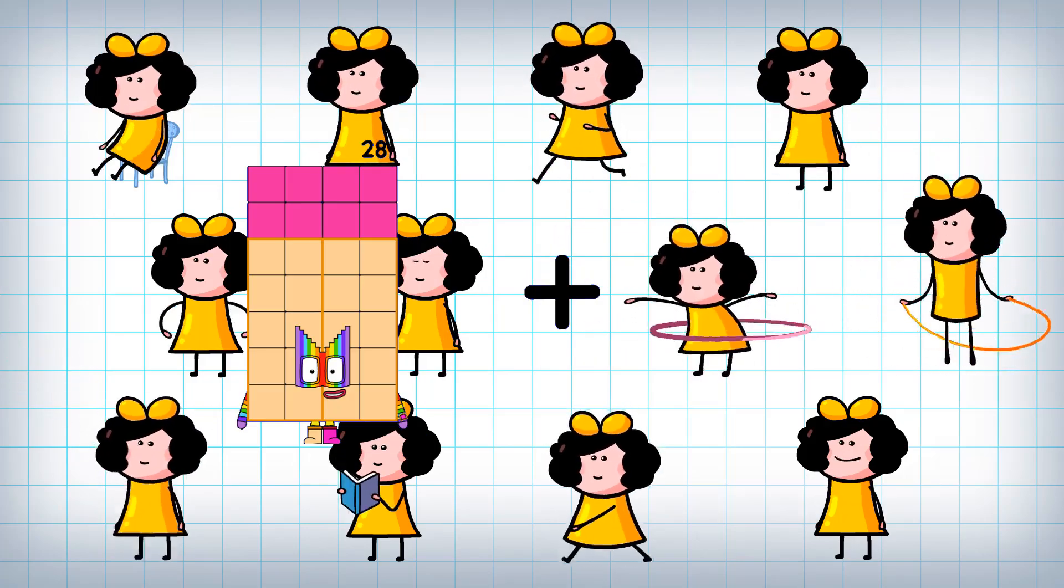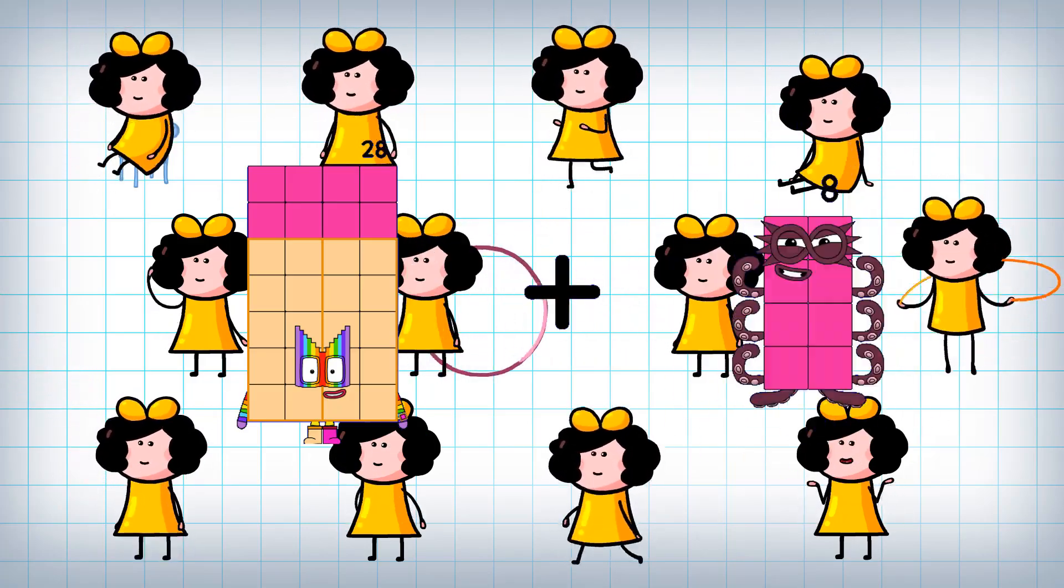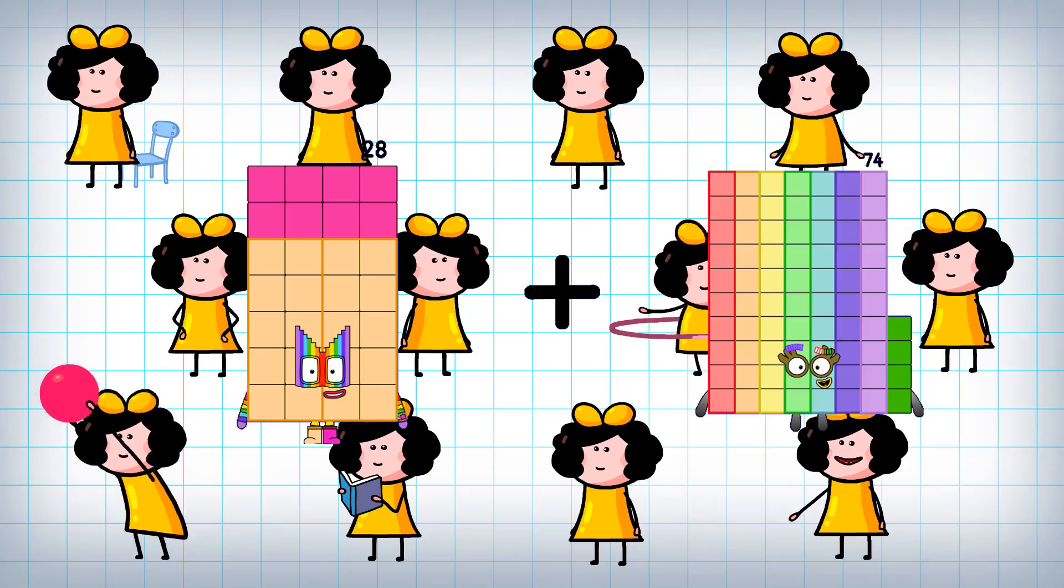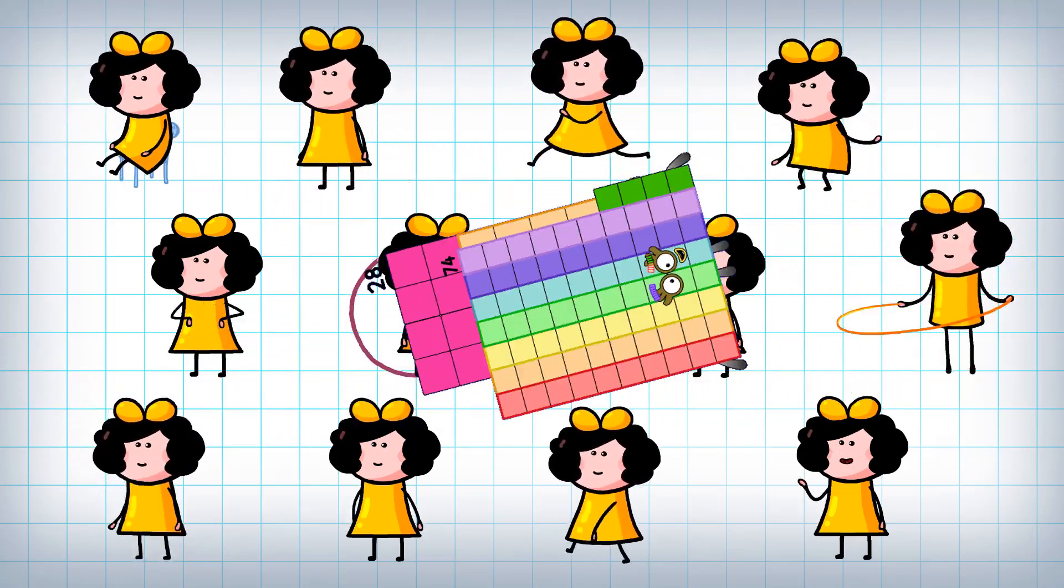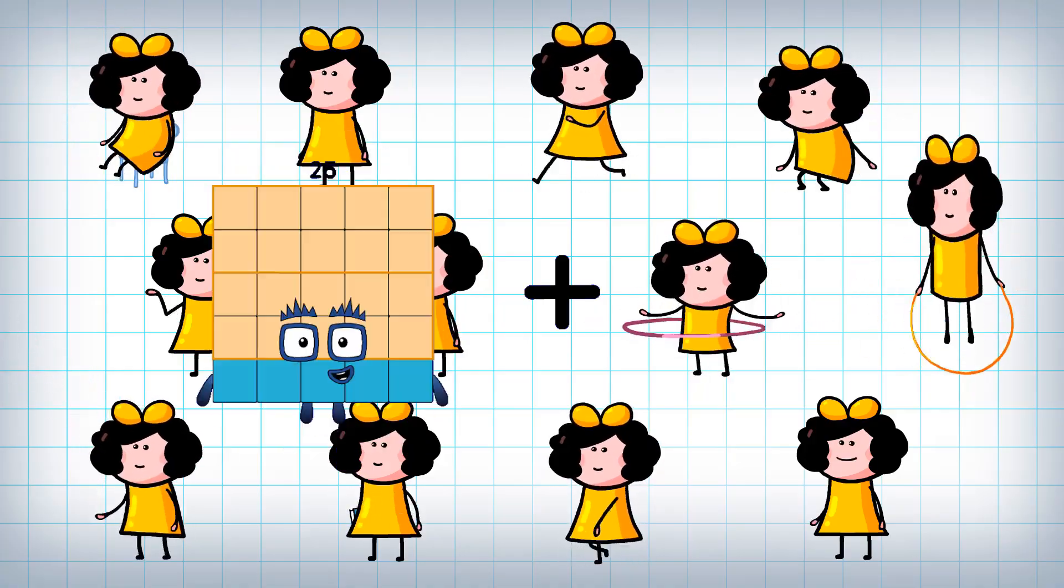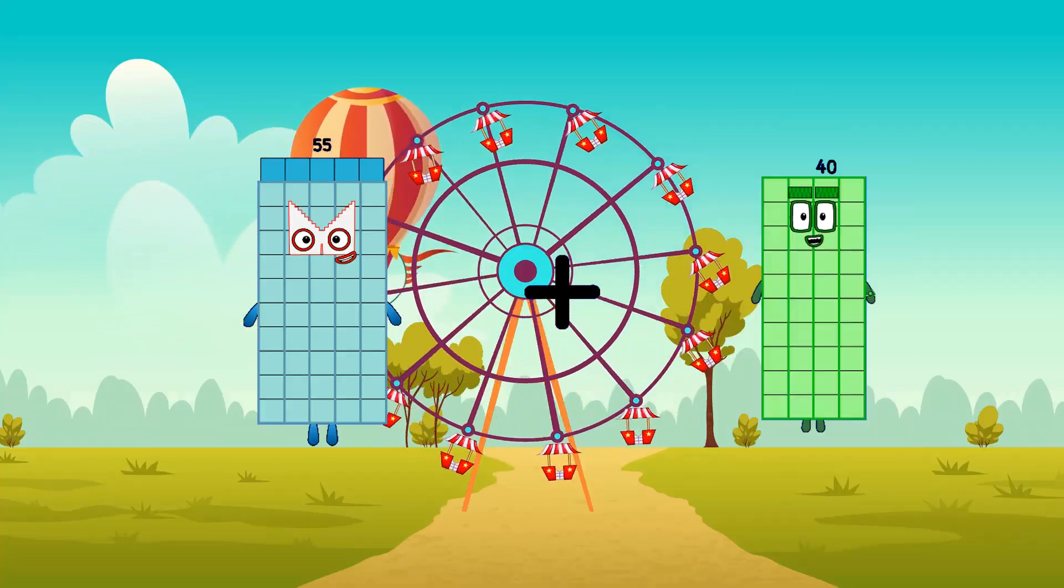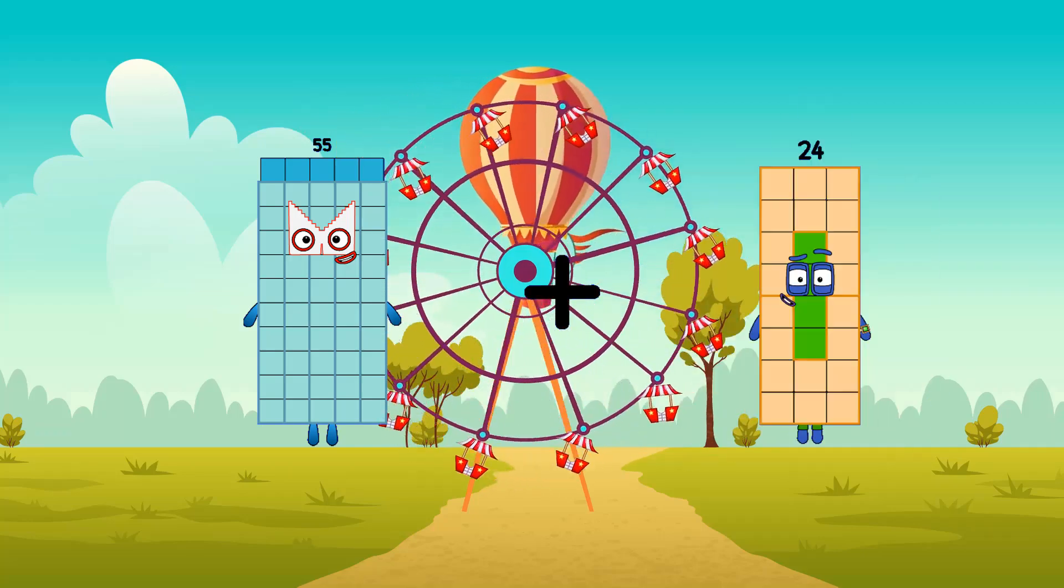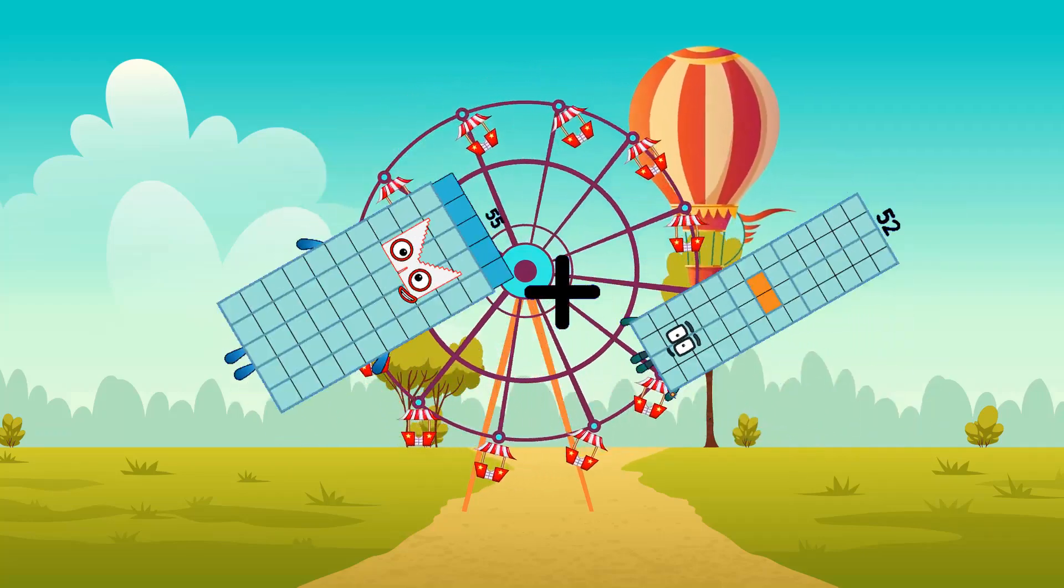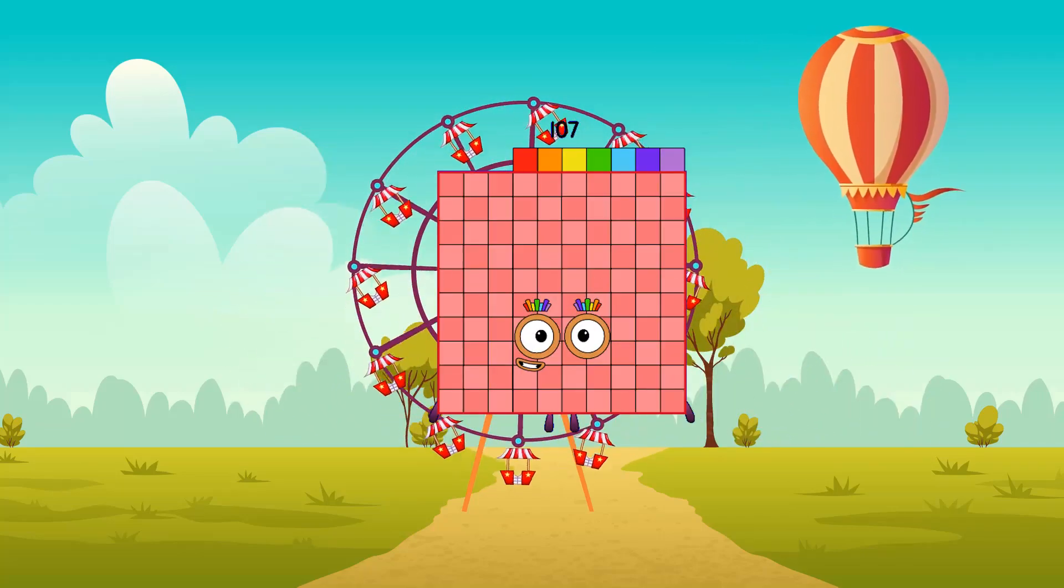28 plus 74 equals 102. 55 plus 52 equals 107.